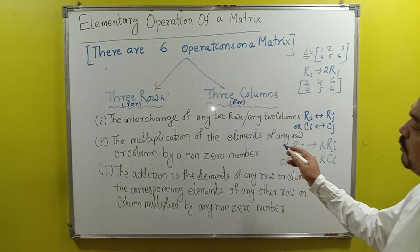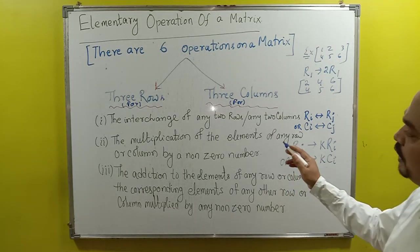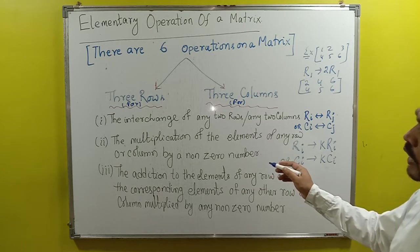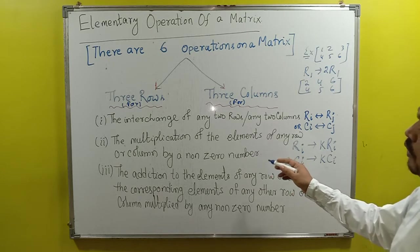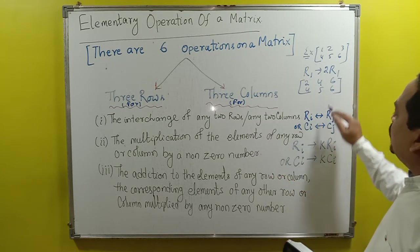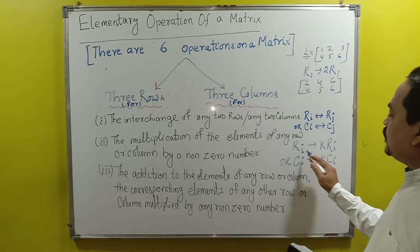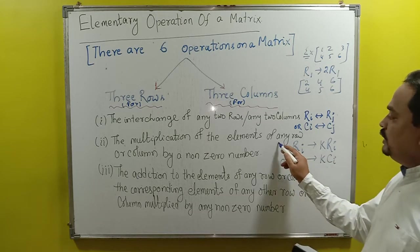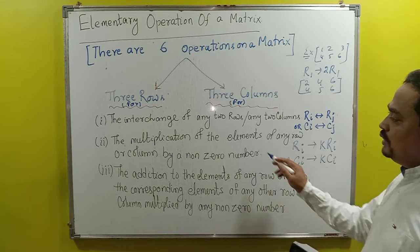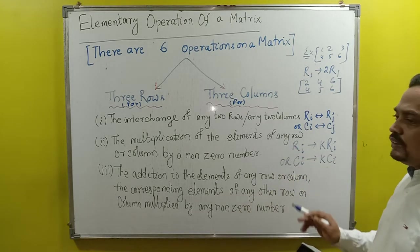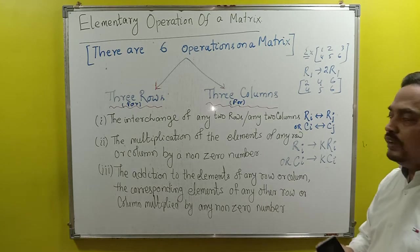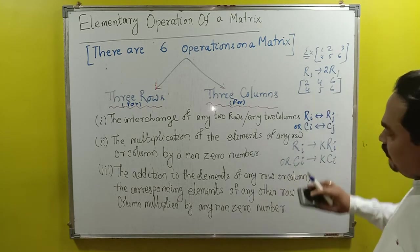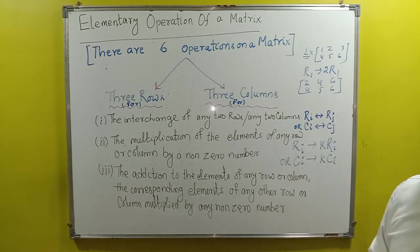Here, the multiplication of elements of any row or column by any non-zero number — this is the symbolic presentation, and that is the statement form. This is your second operation. The example is understood.